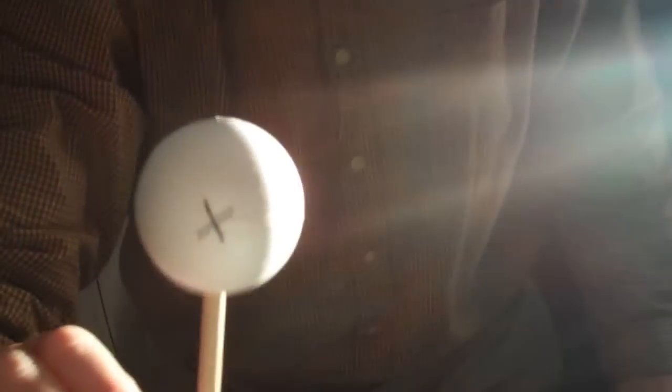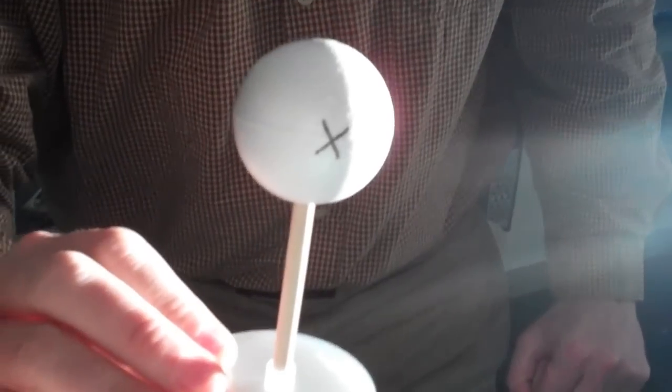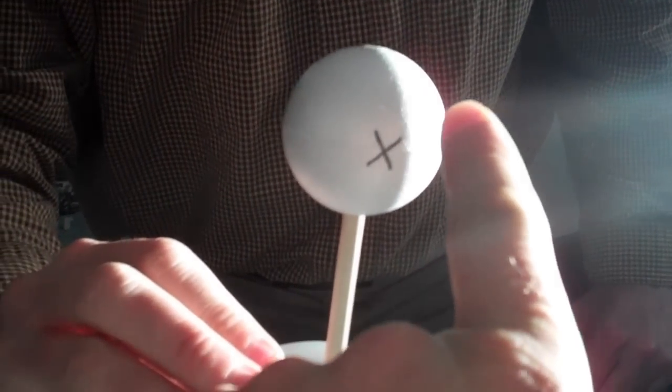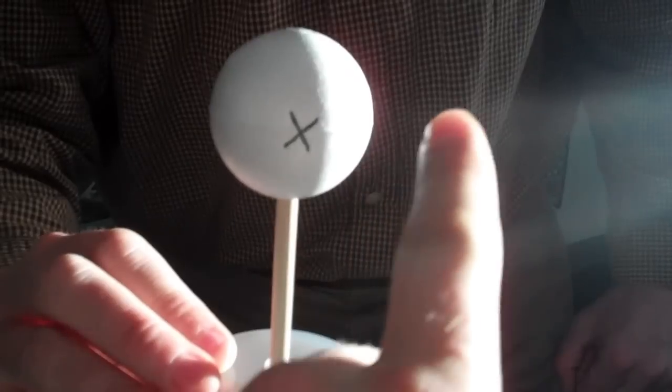But as the moon starts to orbit, you'll notice we always see the side with the X on it. That's the side that's always facing us. As it's orbiting, it gets more and more lit up. You see this side over here, this is called waxing because it's getting more and more bright. And right now we've got a crescent.